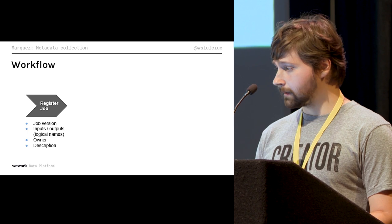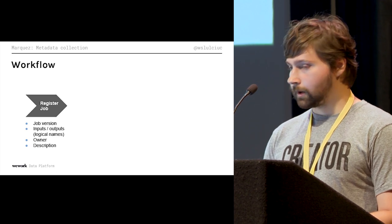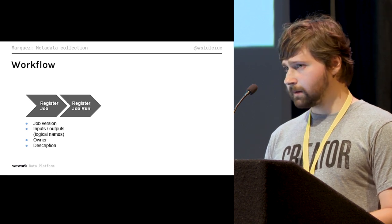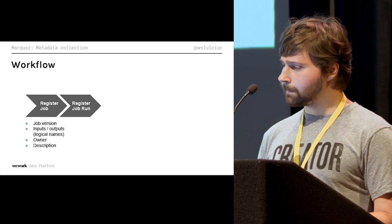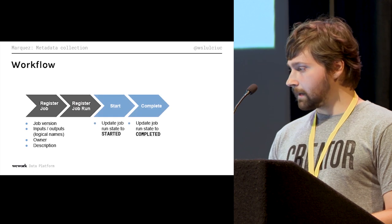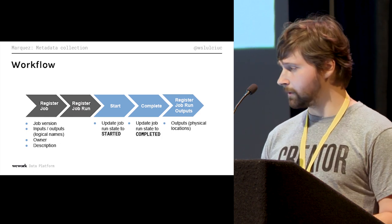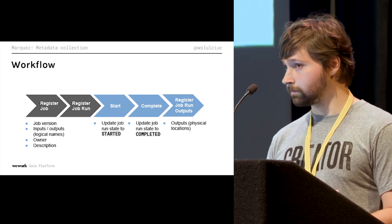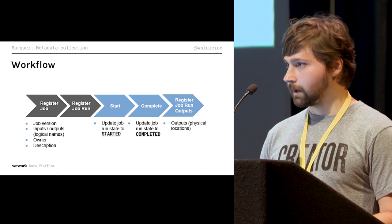Generally, the workflow looks like: a job is registered with a job version, input and output datasets as logical names, the owner, and description. We register a job run by making an API call, executing a run, and getting back a unique run ID to start updating state. You update job state at different parts — start and complete. When you've finished processing and ingested your data, you register the output dataset with its physical location, because Marques needs to know where that dataset is located — a pointer to that data source.